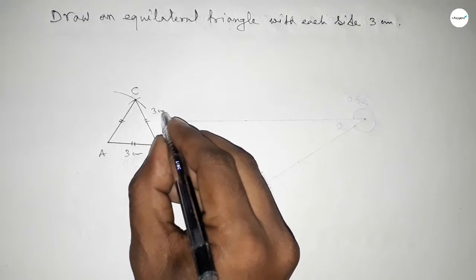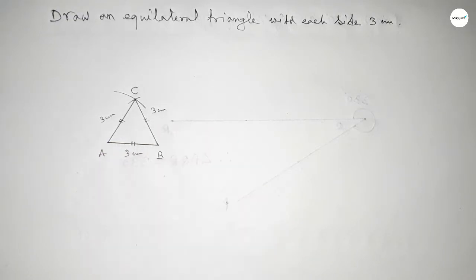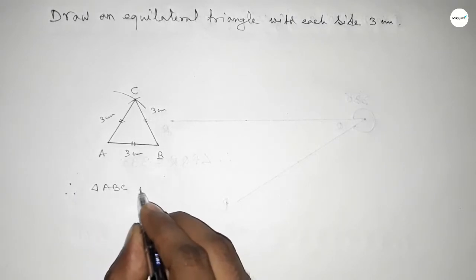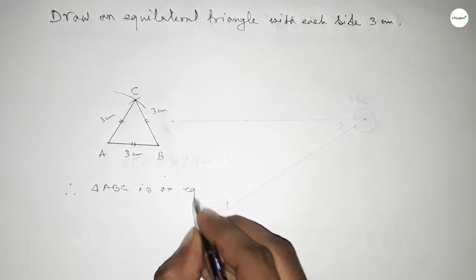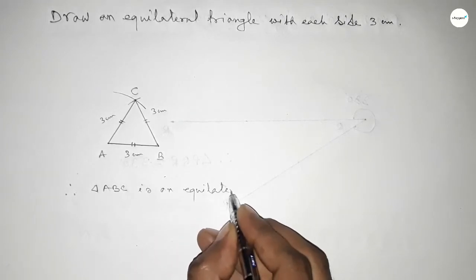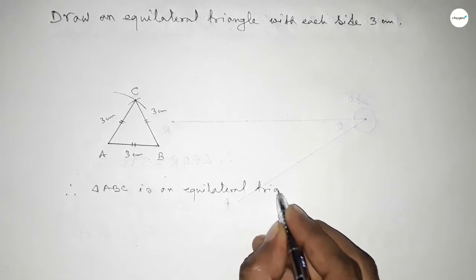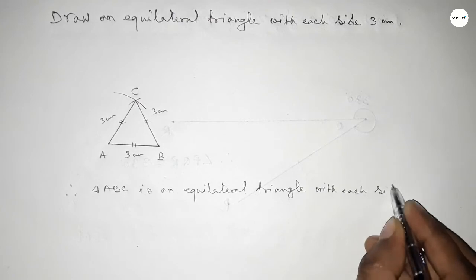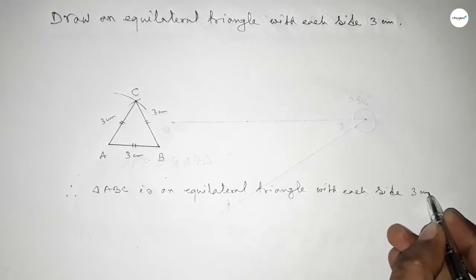Therefore triangle ABC is an equilateral triangle with each side 3 centimeter. So by this process we can construct an equilateral triangle with each side 3 centimeter.